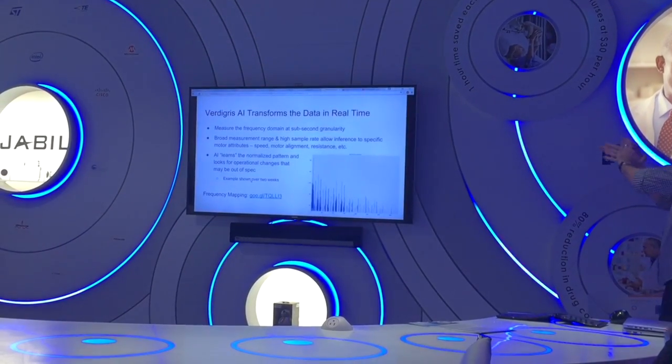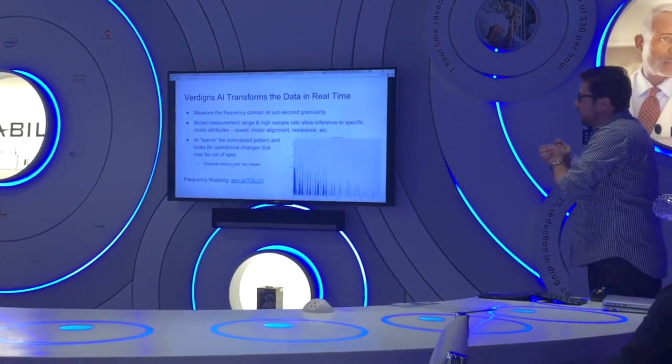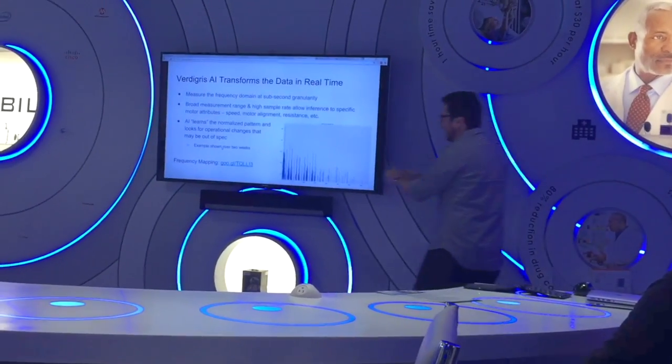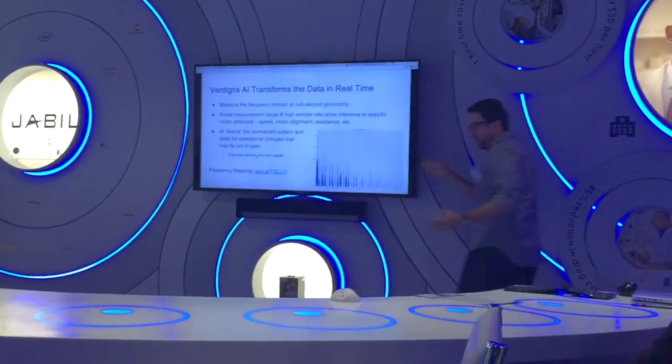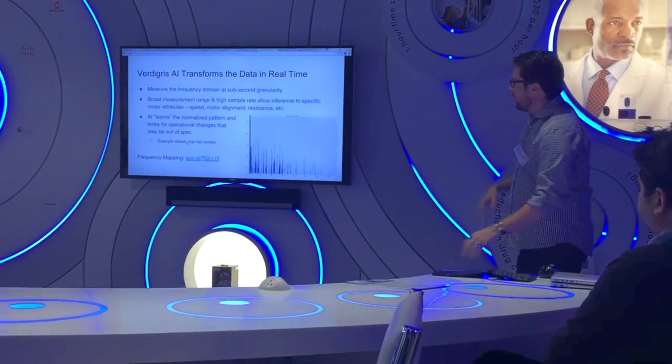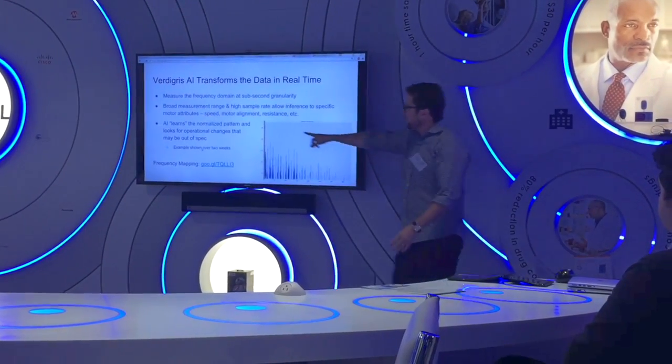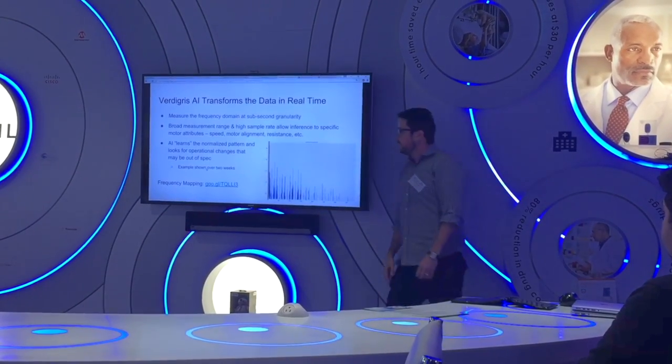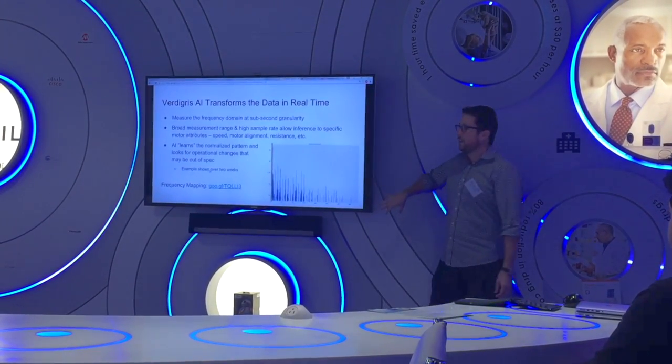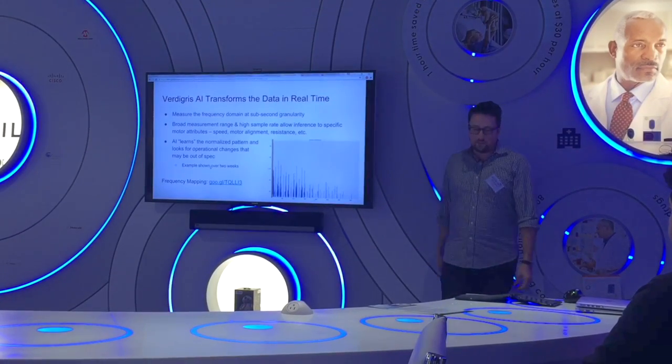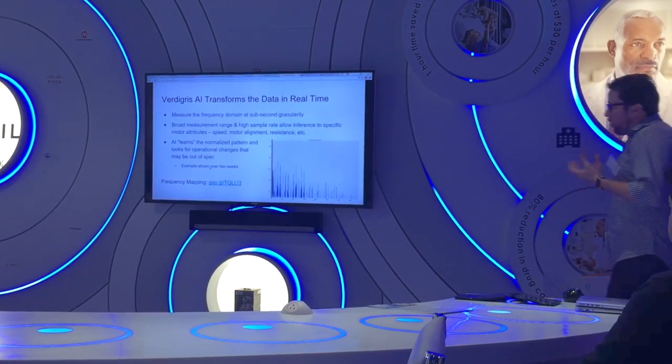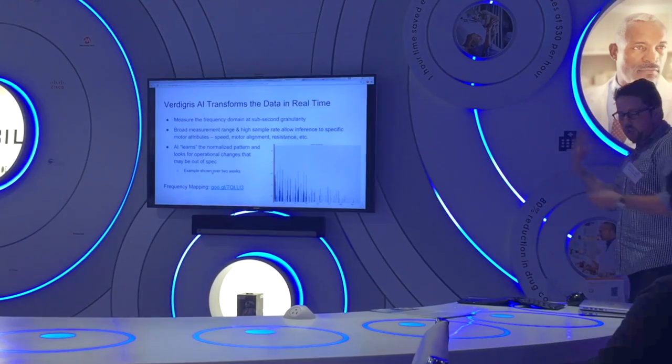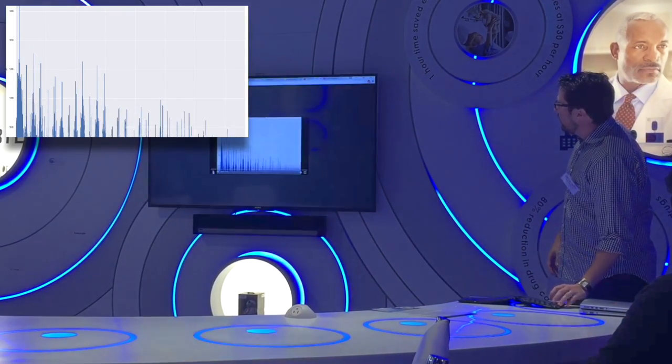So then I'll talk about some of the motor fault stuff. So again, I said we're capturing really high granularity data, looking at this very wide spectrum. Just to show a point of comparison, this little yellow sliver is the amount that a normal sub meter or utility meter would see. So this is the richness of data that we're collecting beyond existing solutions.